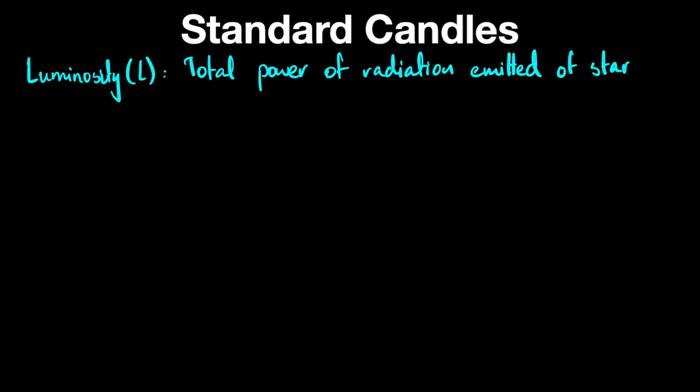Since light is not the only type of radiation emitted, to characterize and generalize this to all types of radiation, we instead use the word radiation. So luminosity is the total power of radiation emitted by a star.